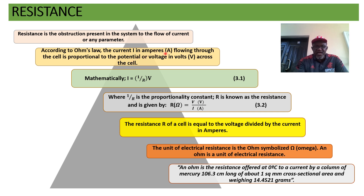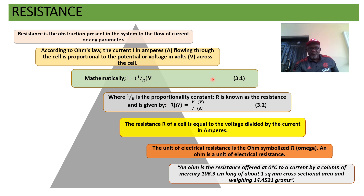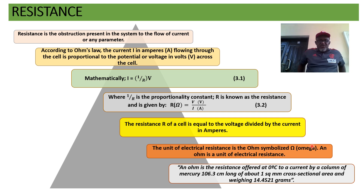According to Ohm's law, the current in amperes flowing through the cell is proportional to the potential or voltage applied across the cell. So current is proportional to voltage. When the proportionality constant is introduced, current is equal to 1 over R multiplied by V, where 1/R is the proportionality constant and R is known as resistance. Therefore, from this equation, resistance R is equal to the voltage divided by the current in amperes. The unit of resistance is Ohm, because it comes from Ohm's law.